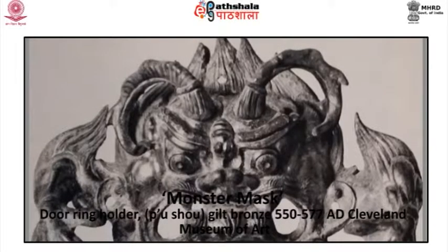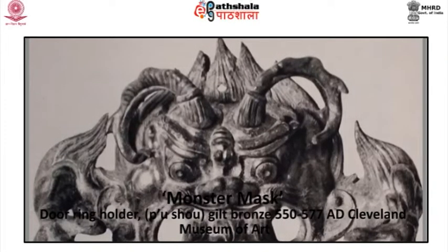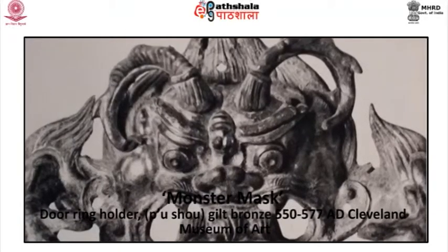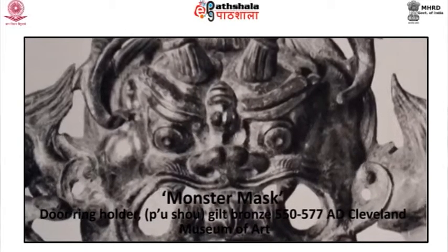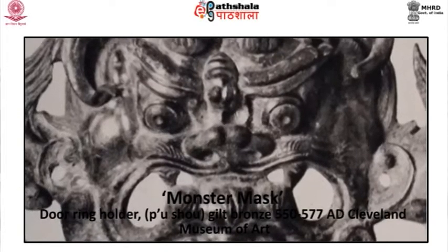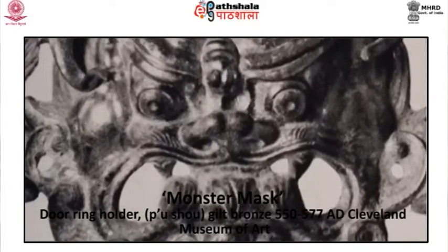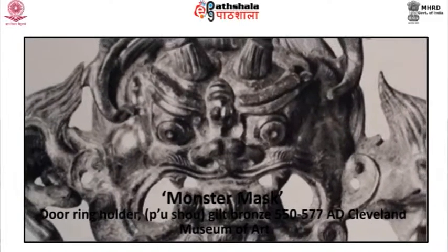A door ring holder made of gilt bronze, dated to 550 to 577 AD, is at present in the Cleveland Museum of Art. The monsters where the attendants are carried at their own tongue are among the most imaginative and sculpturally convincing products of the period. Like other members of the same family in gilt bronze, they are bizarre arrangements of volumes and voids, as well as being representational grotesques, taking their proper place in the long history of Chinese secular sculpture.